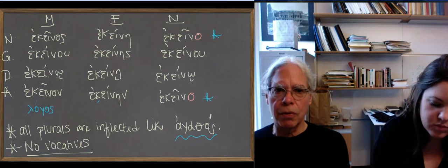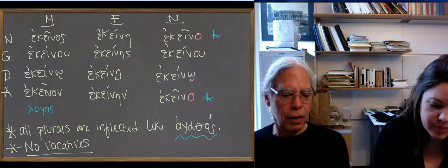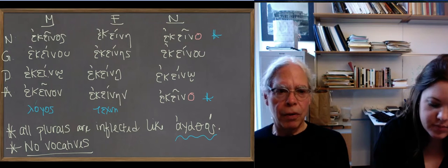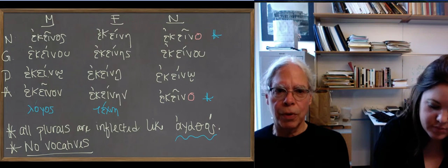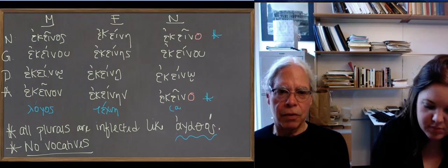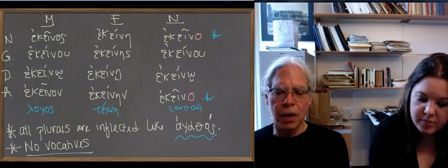That is the neuter nominative or accusative singular is just o, and no nu after it. So other than those two forms, the ones with the little red omicrons, this word is inflected exactly like agathos.